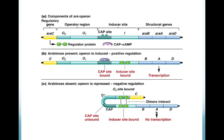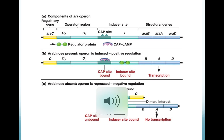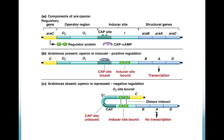To summarize: when arabinose is present, we have positive regulation. The operon is induced to produce BAD genes, araC gene product binds to araO1 and the CAP site or inducer site, enabling RNA polymerase to start transcription. When arabinose is absent, the operon is repressed and we have negative regulation — no transcription of the BAD gene. A loop is formed between the O2 site and the inducer site, so no polymerase can come in to initiate transcription.